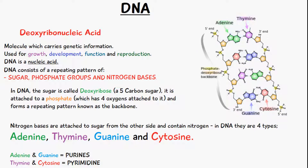In DNA the sugar is called deoxyribose — it's a five-carbon sugar. It's attached onto the phosphate group, which has four oxygens attached to it, and this basically forms the backbone of DNA, forming one strand. You have a repeating pattern of the sugar and phosphate groups which forms the backbone, and then the nitrogen bases are in the middle, with another backbone of sugar and phosphate groups on the other side. If you imagine a ladder, it's kind of like both sides of the ladder.